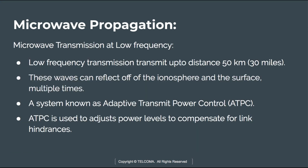Microwave transmission at low frequencies can transmit up to a distance of 50 kilometers, or about 30 miles. These waves can reflect off the ionosphere and the surface multiple times. A system known as Adaptive Transmit Power Control, or ATPC, is used at low frequency transmission to adjust the power level to compensate for link hindrance, such as attenuation from rain, by automatically adjusting the power level according to weather conditions.